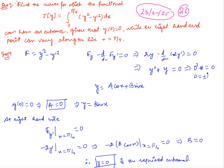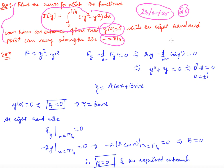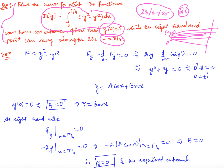This is the first question we are going to solve. We have to find the extremal of a given functional such that the left-hand boundary is fixed and the right-hand side can vary along the line x equals π/4. The left-hand point is (0,0) and the right-hand point is such that x = π/4 and y can take any value. These are your admissible curves.